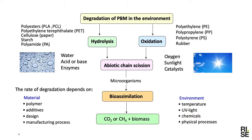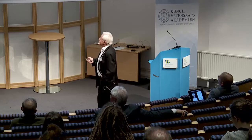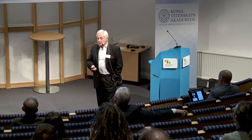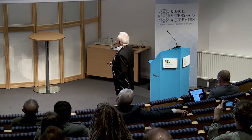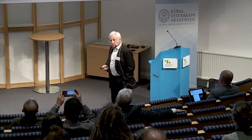If we talk about degradation of polymer-based materials, we can divide the degradation processes into two groups. One group of materials degrades mainly by hydrolysis — like polyesters, cellulose, starch, polyamides, and others. This depends on the water and whether we have an acidic or basic environment, and is also promoted by some enzymes in nature. The other group is materials that degrade by oxidation, and in this group are most of the common polymers.